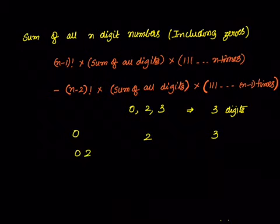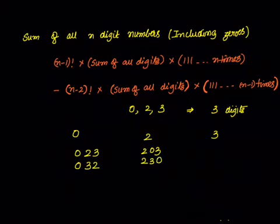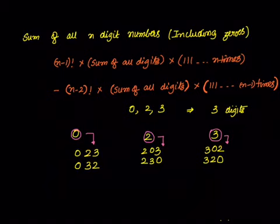Now without the formula, let us enumerate. We find all numbers starting with 0: 023 and 032. Starting with 2: 203 and 230. Starting with 3: 302 and 320. The sum of all these numbers is 320 + 620 + 850 + 1055 + 1087 = 1110.